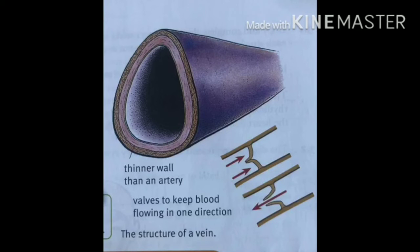Capillaries also connect the arteries to the veins. Veins are a similar size to arteries; however, their walls are much thinner and the space inside them is larger. Veins do not need thick or elastic walls, and they contain valves which only let blood flow one way — towards the heart.